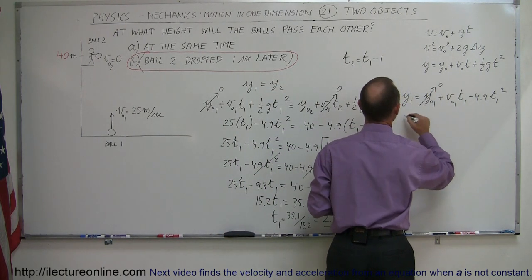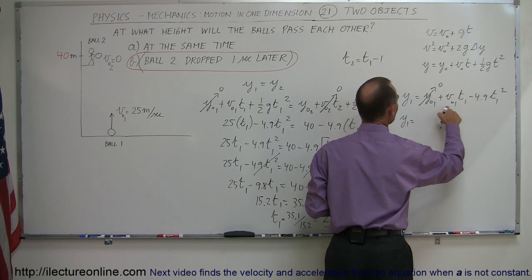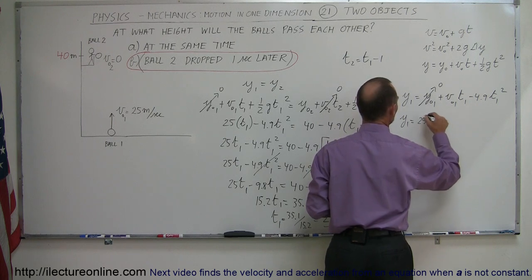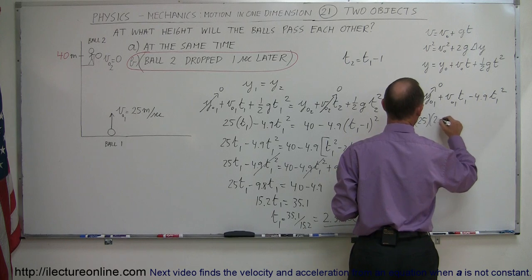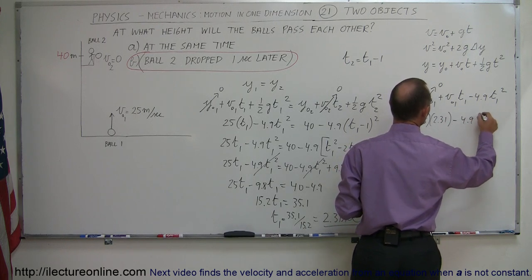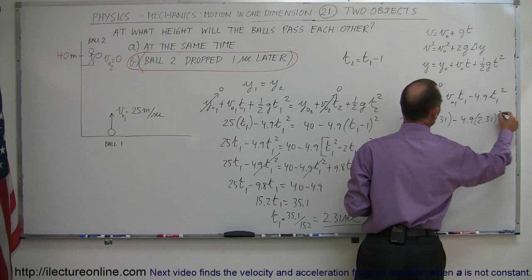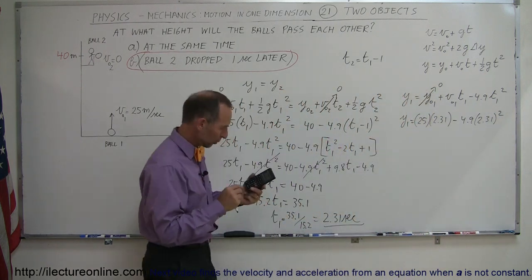y1 is what we're looking for, equals v initial for 1, which is 25 meters per second, and the time is 2.31 minus 4.9 times 2.31 squared. Let's work that out quickly.